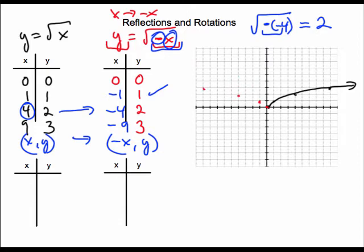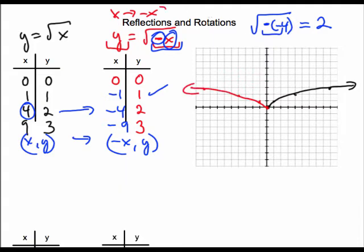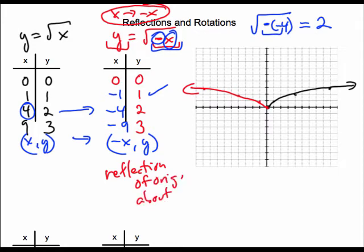Across the y-axis. And that's always true of replacing x with negative x. I get a reflection of the original graph about the y-axis.